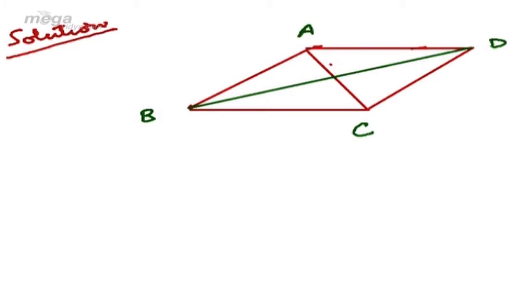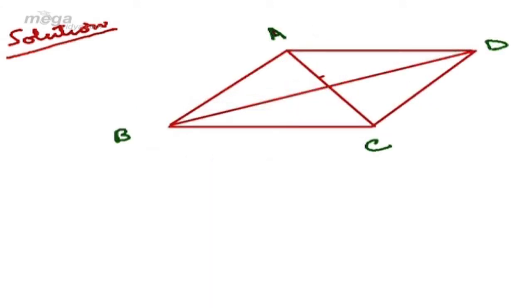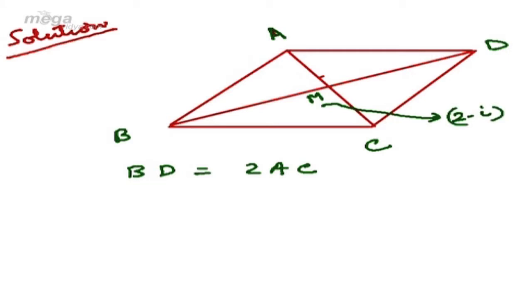Now let us come to the solution. A, B, C, D are the four vertices of a rhombus. Given BD equals twice of AC. M is the point of intersection of the two diagonals. D is represented by 1+i, M is represented by 2-i, and AC and BD intersect at M with BD equal to twice of AC.